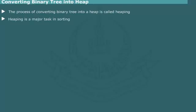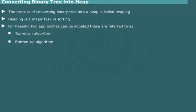Converting tree into heap. In heap sorting, conversion of tree into a heap, commonly referred to as heaping, is a major task. Two common algorithms follow either top-down or bottom-up approach.